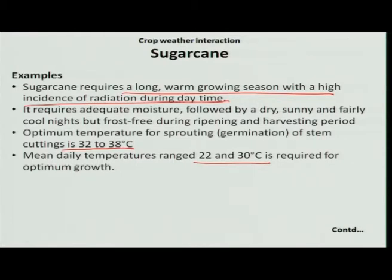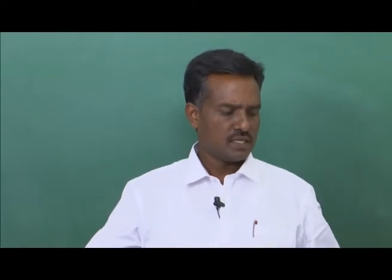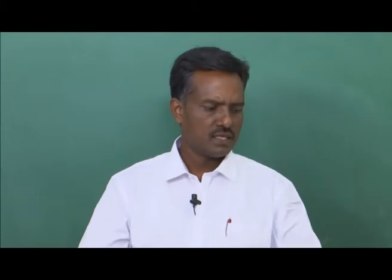Since the growth period is very long, we should consider the temperature factor, specifically the base temperature. The base temperature for different stages — shoot emergence, tillering, and internode elongation — is 12, 14, and 18 degree Celsius respectively. Below the base temperature, plant activity stops and the plant cannot grow.